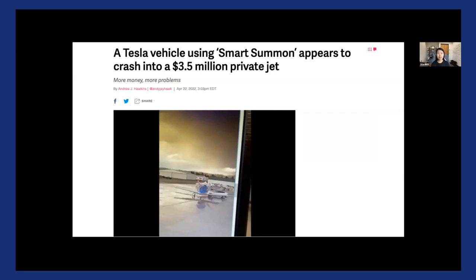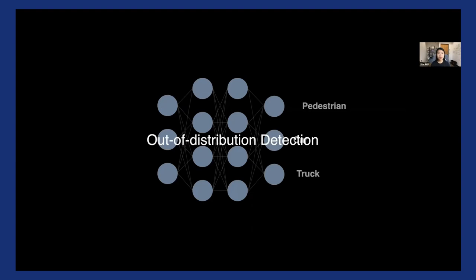And believe it or not, this kind of event can happen in real life as well, causing huge consequences. For example, I'm quoting a news article from just about three months ago, where a Tesla vehicle was reported to crash into a private jet that's worth $3.5 million. And so this out-of-distribution detection problem has become very, very important.